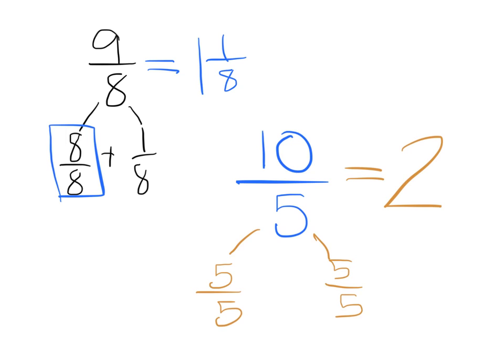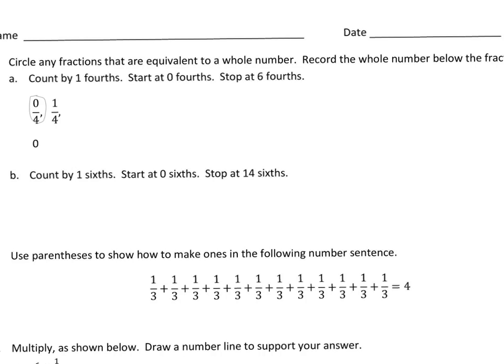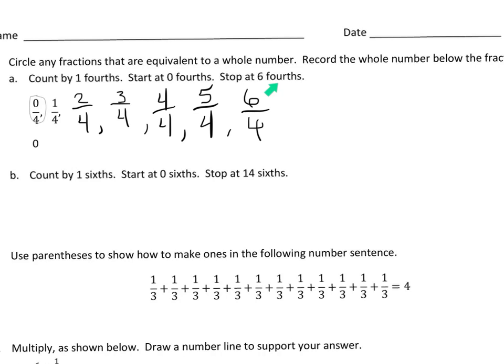On your paper, they're going to have you do some practices that kind of get you warmed up. The first one says count by 4ths, start at 0/4, stop at 6/4. So you're simply going to go: 0/4, 1/4, 2/4, 3/4, 4/4, 5/4, and 6/4. It does want you to circle any fractions that are equal to a whole number. They've circled 0/4 for you, and then you could also circle 4/4, because that's equal to a whole number.